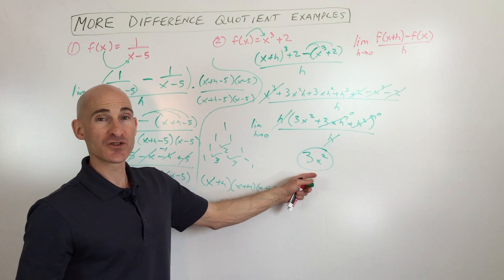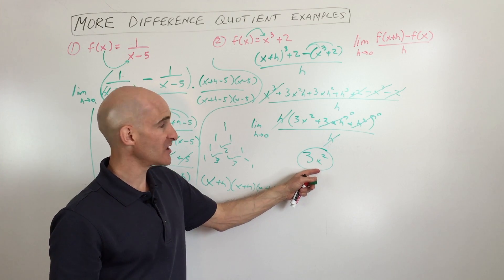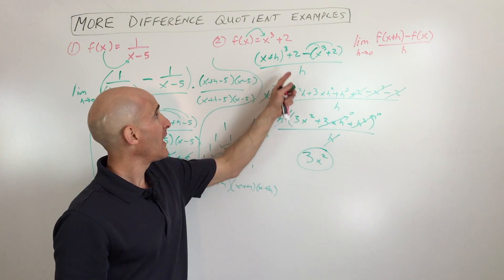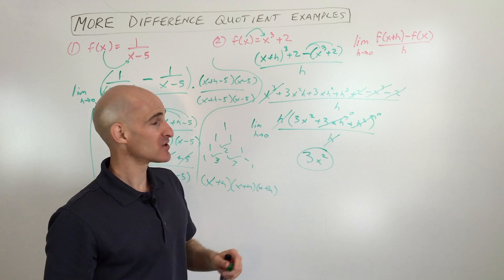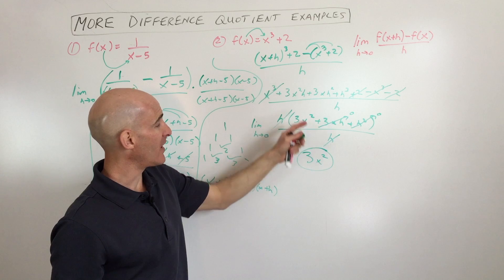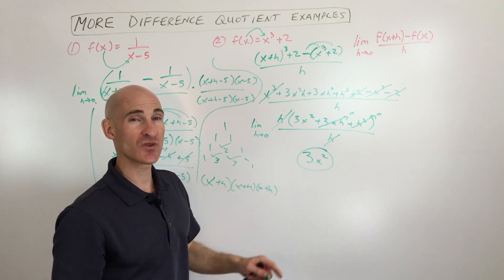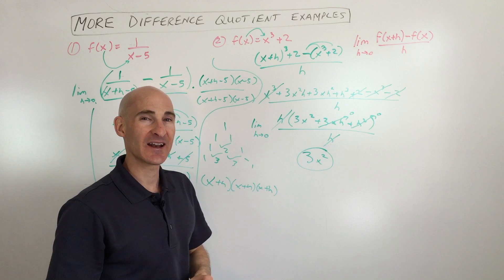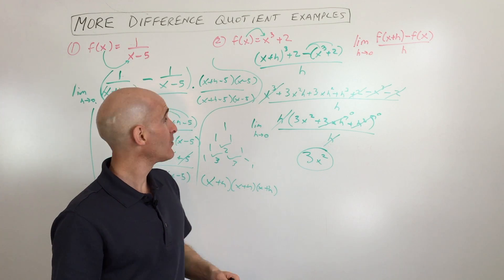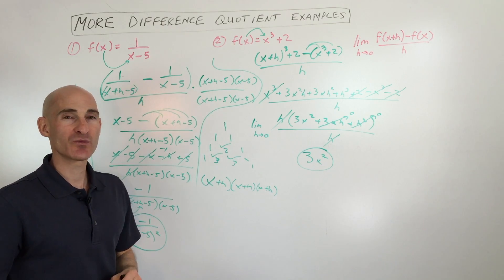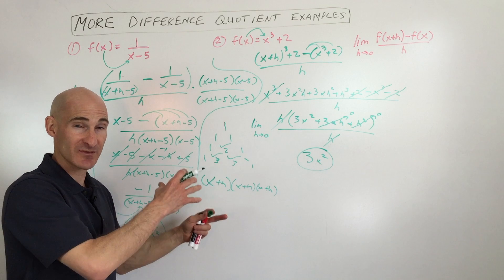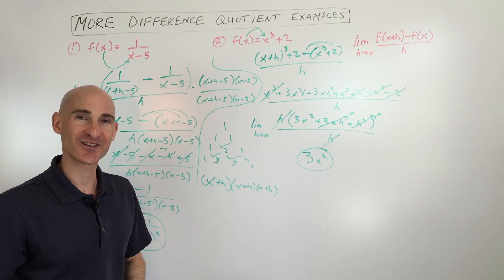So 3x squared is our difference quotient simplified. Remember, the difference quotient is a general formula for finding the slope anywhere along this graph. So if I wanted to find the slope of the tangent line at x equals 1, it would be 1 squared is 1, times 3 is 3 — so it has an instantaneous rate of change of 3 at that point. I hope this helped you understand how to work with the difference quotient. I'll have some links in the cards for my other videos on the same topic, and I'll look forward to seeing you in future videos.